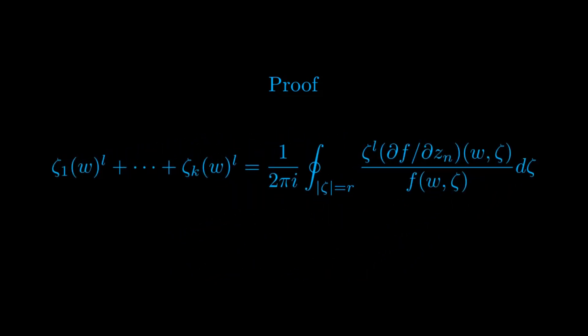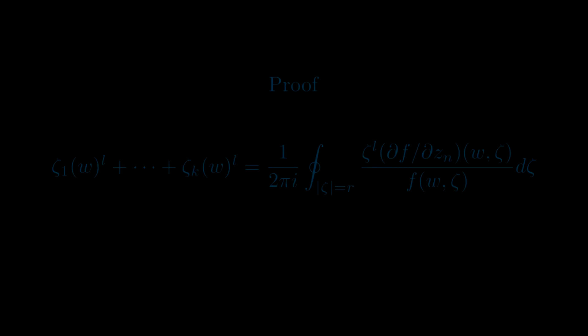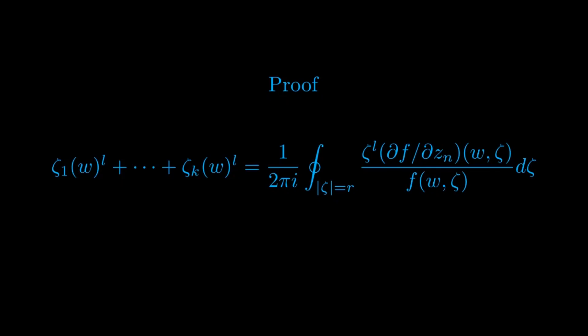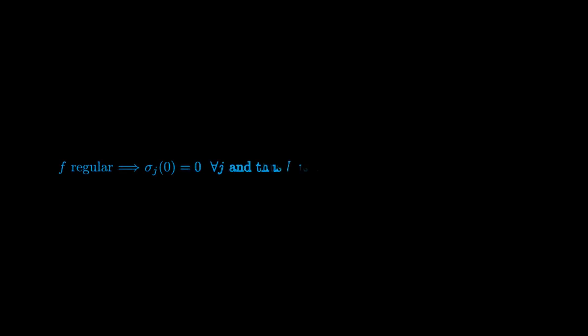By the residue theorem, we evaluate the integral to obtain ζ_1^l + ζ_2^l + ··· + ζ_k^l. By a standard result, this expression is actually a holomorphic function. Since the sum z_1^l + ··· + z_k^l is holomorphic in w, by Newton's formulas each symmetric polynomial σ_j is also holomorphic in w, for |w| < ε and |z_n| < r. The regularity of f furthermore implies that each σ_j(0) = 0. Therefore, h is a Weierstrass distinguished polynomial of degree k.